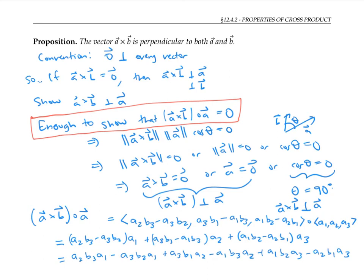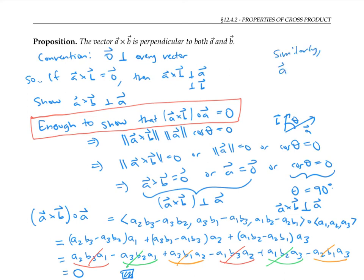Now the fun begins. This first term that has a₁, a₂, b₃ in it cancels out with this term. And the second term, a₁, a₃, b₂, cancels out with this one. Finally, this third term with a₂, a₃, b₁ cancels out with this term. And so since everything cancels out, the dot product is just zero, as we wanted to prove. A similar argument shows that A cross B dotted with B is equal to zero. And so A cross B is perpendicular to B as well.